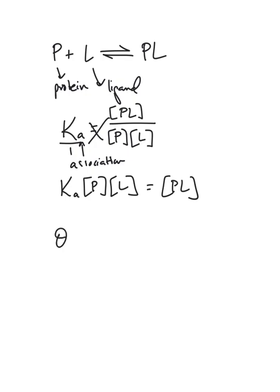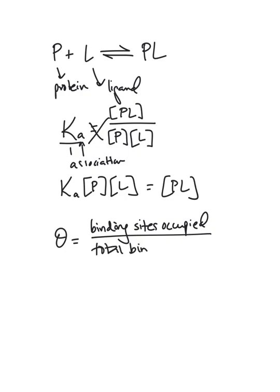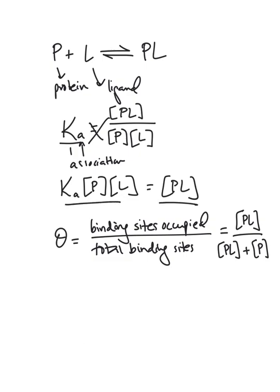Now we introduce the concept of theta, which is fractional saturation — the binding sites that are occupied over the total binding sites. The occupied sites are represented by the PL complex, and total sites are all spots that are bound plus all those that are not yet bound, which is just the protein by itself. So theta equals PL over PL plus P.